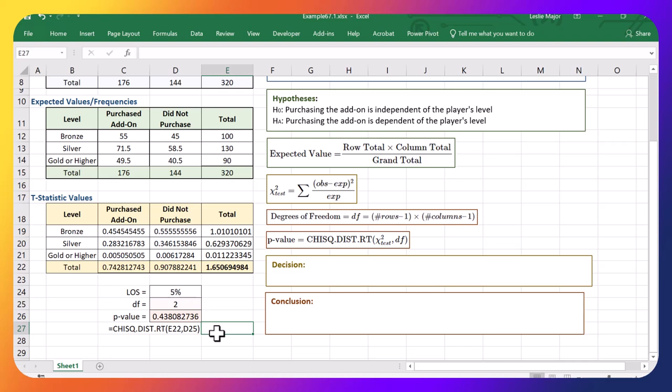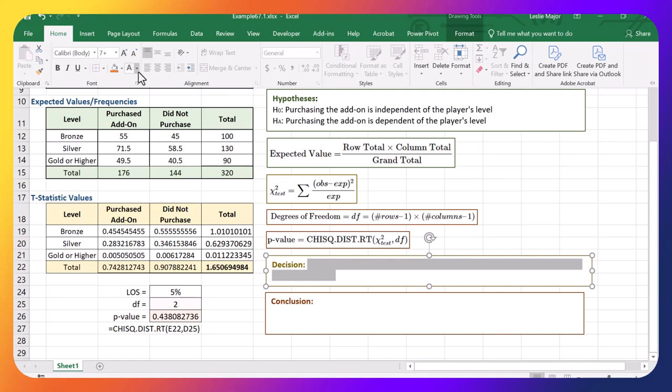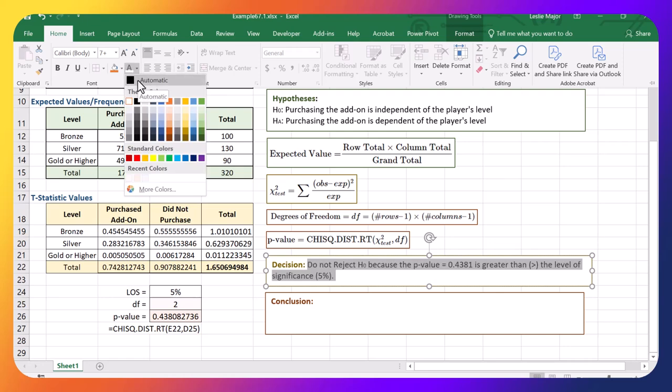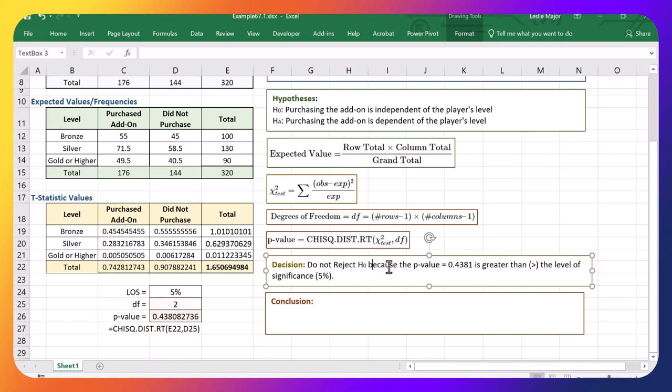What does this mean? Well, that is way above the 5%. So our decision ends up being the following: that we fail to reject H naught. We do not reject H naught because the p-value is greater than the level of significance.